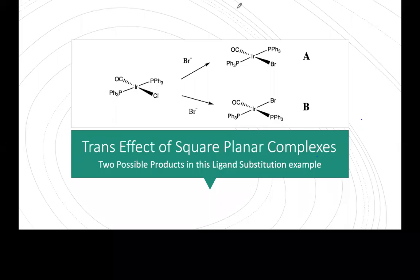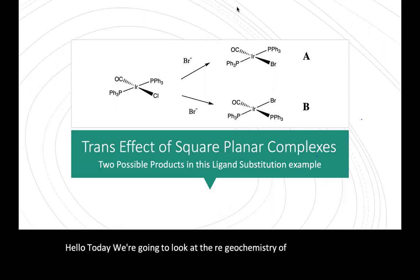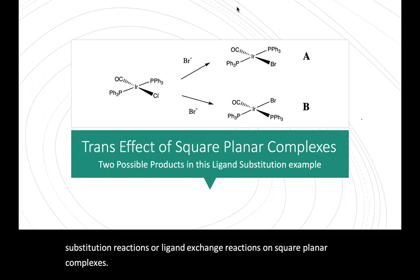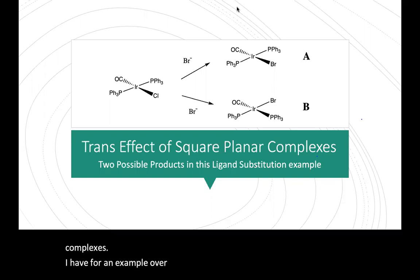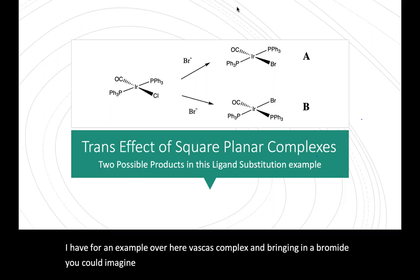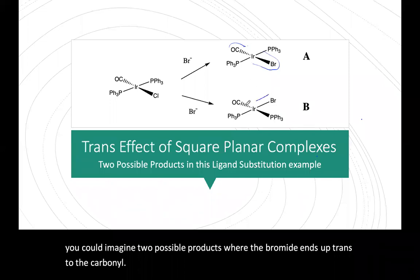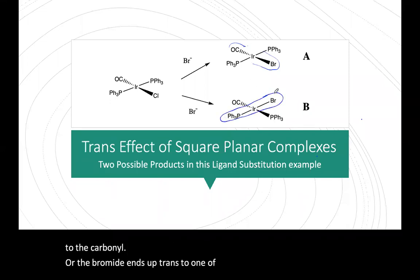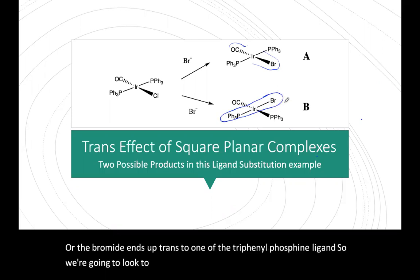Today we're going to look at the regiochemistry of ligand substitution reactions, or ligand exchange reactions, on square planar complexes. As an example, we have Vaska's complex, and bringing in a bromide, you could imagine two possible products: where the bromide ends up trans to the carbonyl, or where the bromide ends up trans to one of the triphenylphosphine ligands. So we're going to look to see which product is formed.